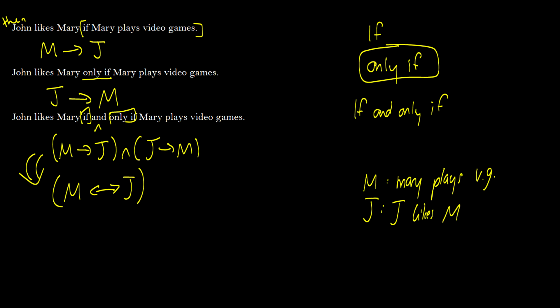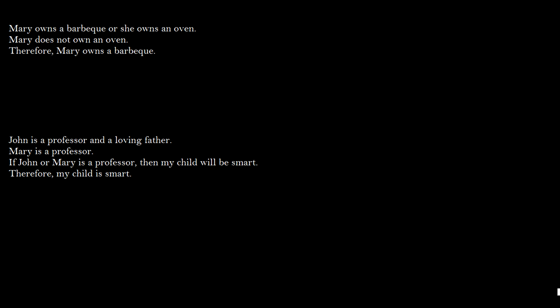Now we're going to symbolize some sentences into premises and conclusions for proofs. Premise 1: 'Mary owns a barbecue or she owns an oven' → B ∨ O. Premise 2: 'Mary does not own an oven' → ¬O. Conclusion: 'Mary owns a barbecue' → B. Make sure your letters are consistent throughout.